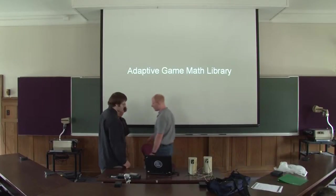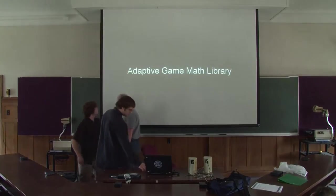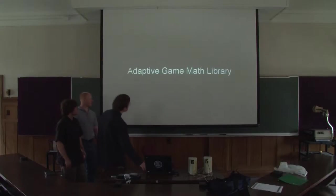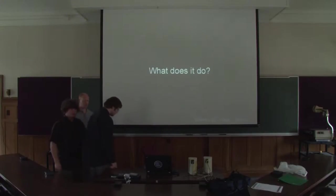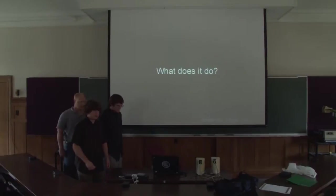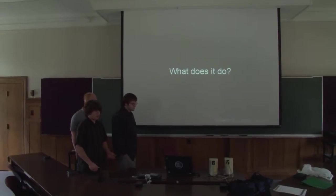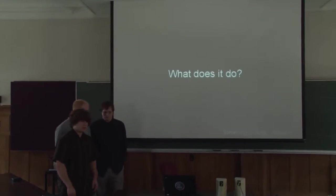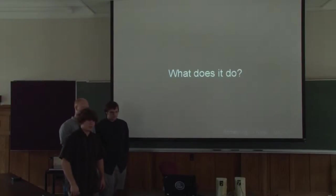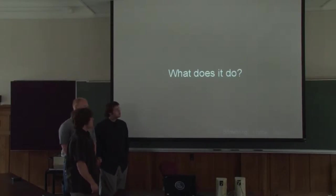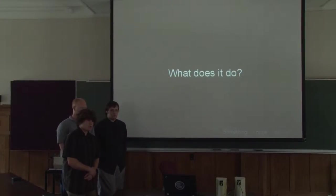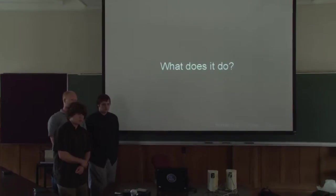We're the Adaptive Game Math Library team. I'm Matt, I'm Turell, and I'm Mike. The Adaptive Game Math Library, or AGML, is a set of math routines and functions designed to speed up the process of creating a video game. It's adaptive because we're using self-modifying code to implement optimized versions of functions based on the processor architecture.